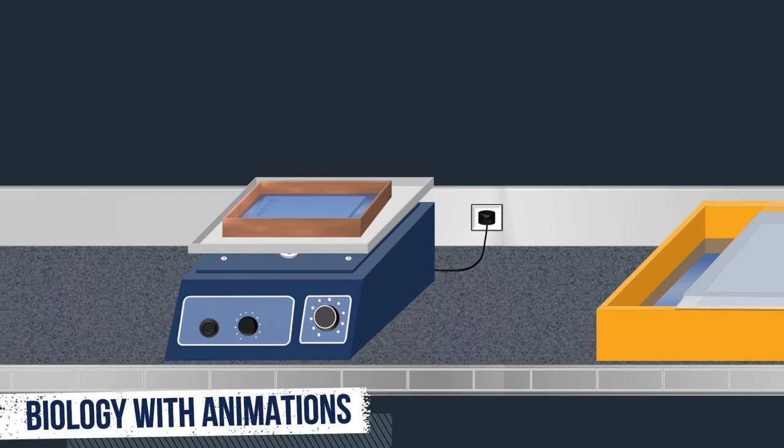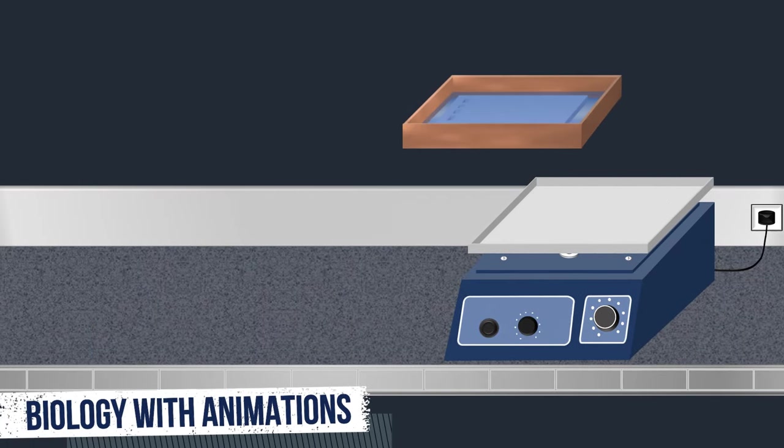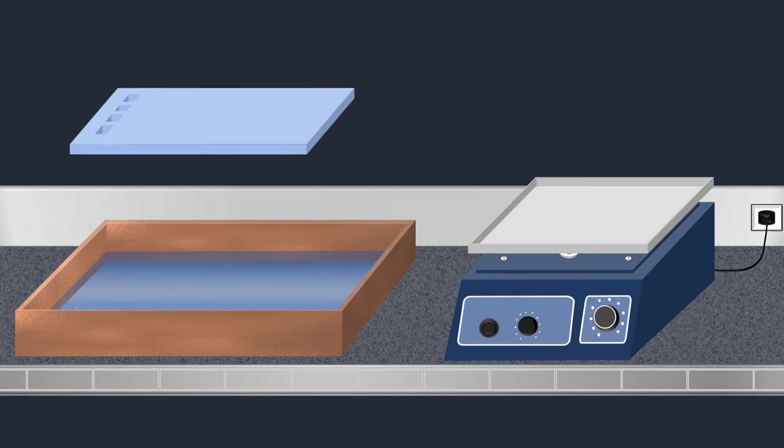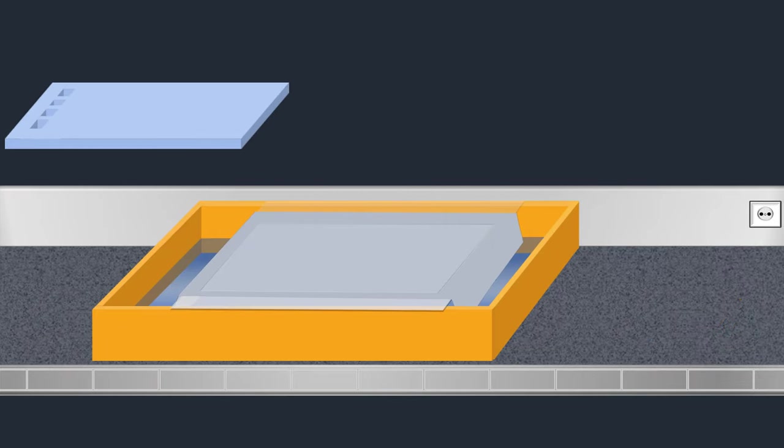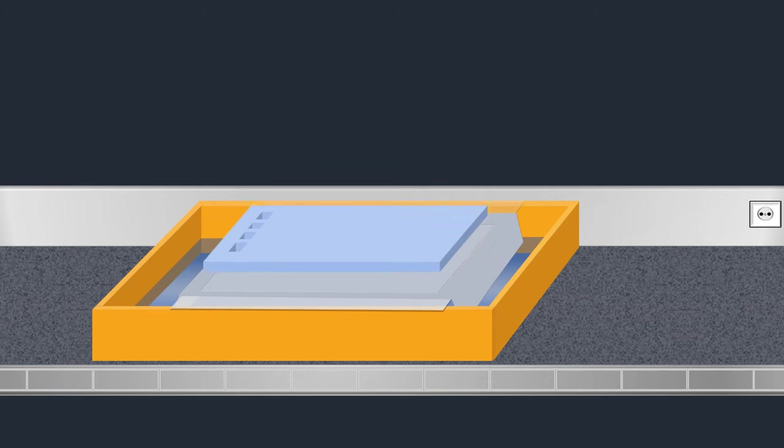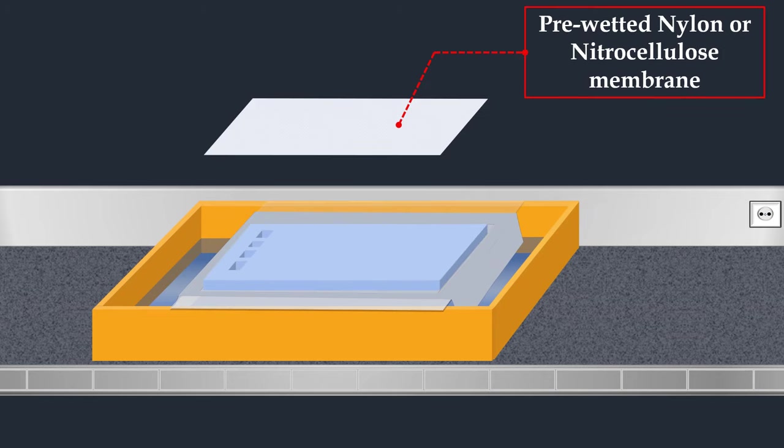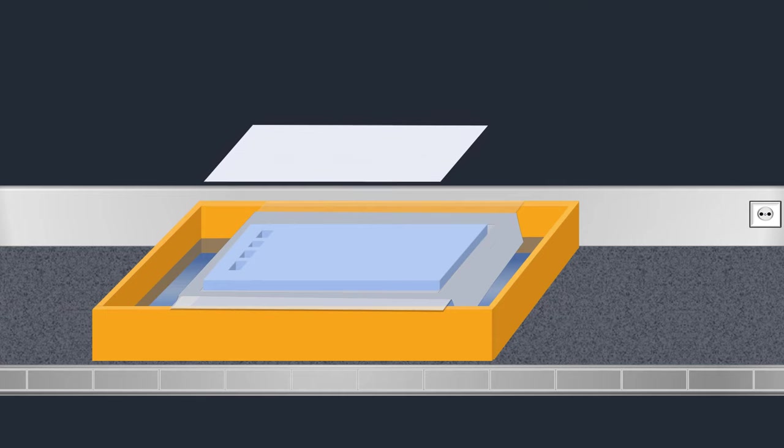Once the gel is neutralized, it is placed on the thoroughly wetted wicking paper. Then a sheet of nylon or nitrocellulose membrane with the same size as the gel is pre-wetted with the transfer solution and placed on top of the gel.